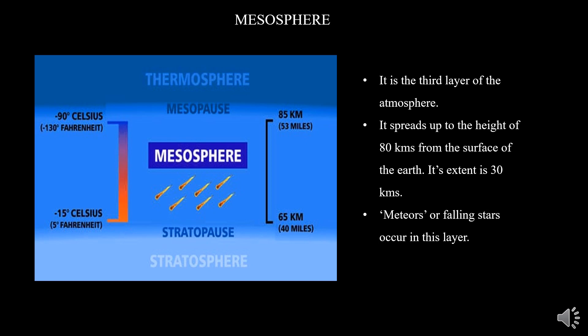The mesosphere is the third layer of the atmosphere, spreading over the stratosphere. It spreads up to a height of 80 kilometers from the surface of the earth, with an extent of 30 kilometers. The temperature goes on decreasing and drops up to minus 100 degrees C. Meteors or falling stars occur in this layer.